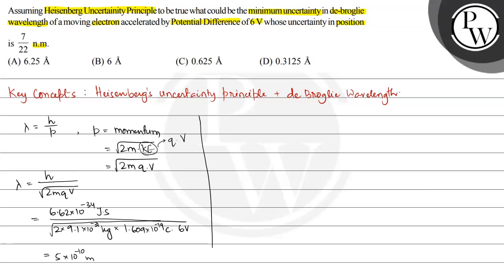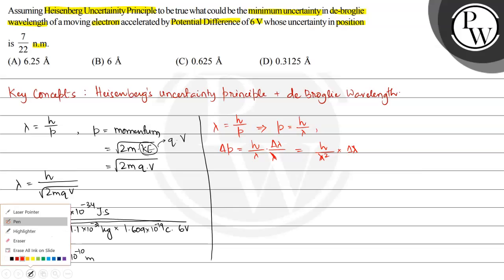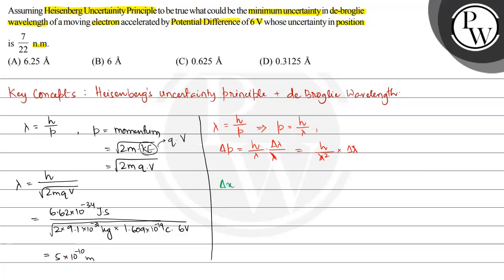Now, since λ = h/p, we have p = h/λ. If we calculate the uncertainty in momentum, then Δp = (h/λ)·(Δλ/λ), which is the relative uncertainty. This simplifies to Δp = (h/λ²)·Δλ.